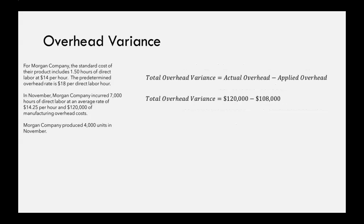Now we can put that into our equation for overhead variance. Our actual overhead of $120,000 minus our applied overhead of $108,000 tells us that our total overhead variance is $12,000.